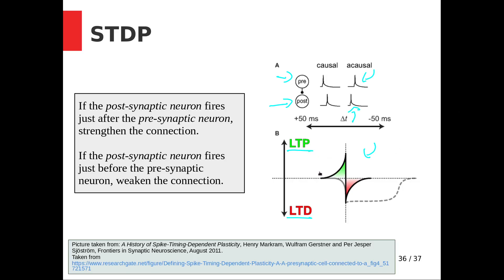The narrower the time gap, the stronger the effect: if the presynaptic fires just before the postsynaptic we strengthen them a lot; if the presynaptic fires just after the postsynaptic we weaken them a lot. If the postsynaptic fires way before the presynaptic, we're outside the window and essentially do nothing. This is shown in the LTP (long-term potentiation) and LTD (long-term depression) curves.